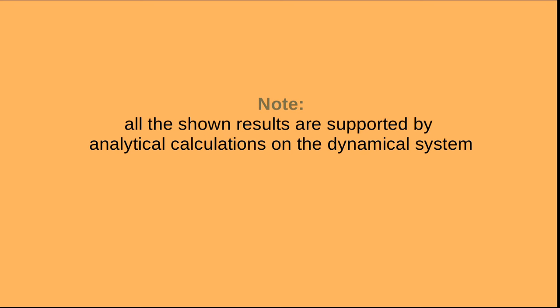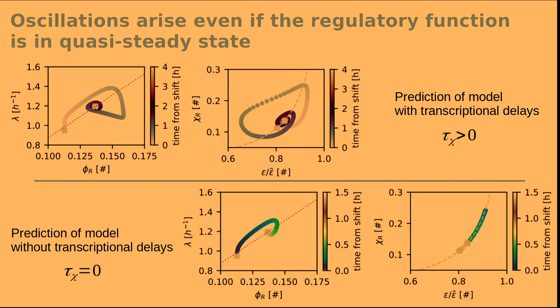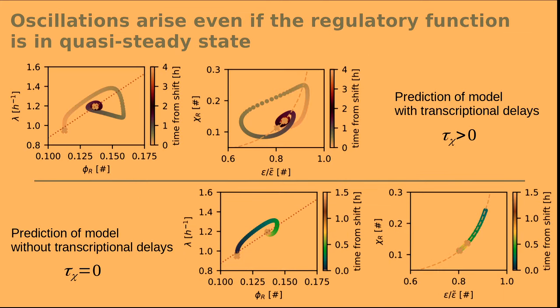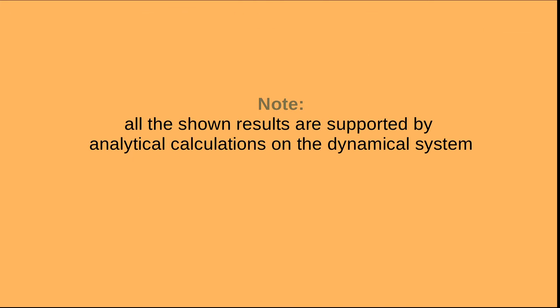The doubling time — the growth rate is shown on the y-axis — so the doubling time will be maybe around 20 minutes for the post-shift. There is no cell cycle before the oscillation drives out. Maybe we can see it better here — three hours is quite long. All the results shown are also supported by analytical calculations where we treated our framework as a dynamical system, studying the eigenvalues, the stable fixed point, etc.